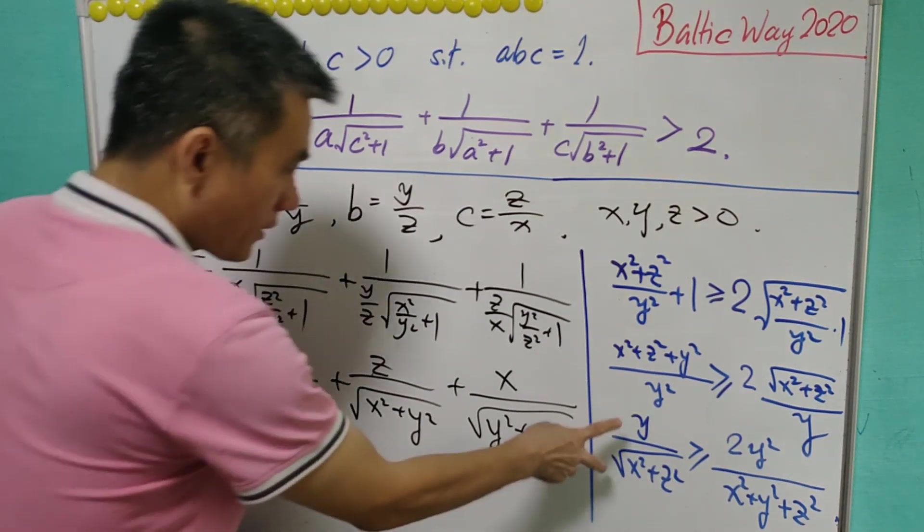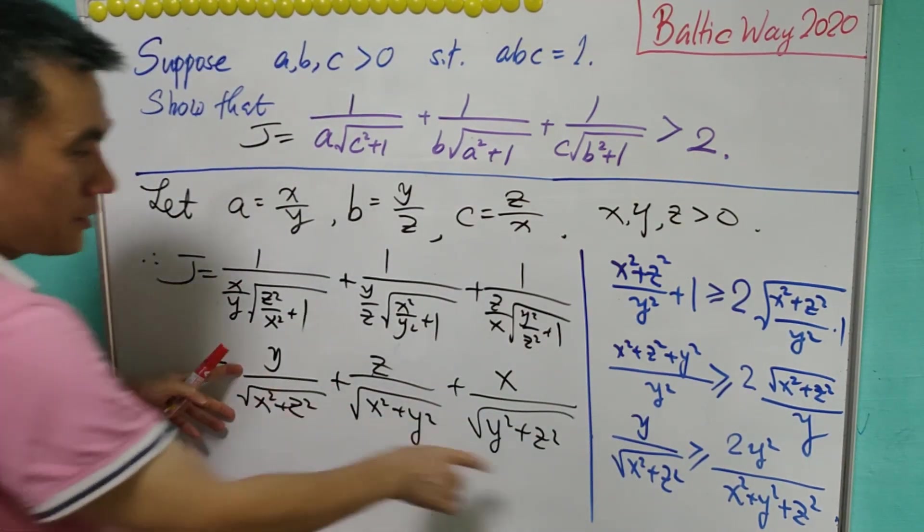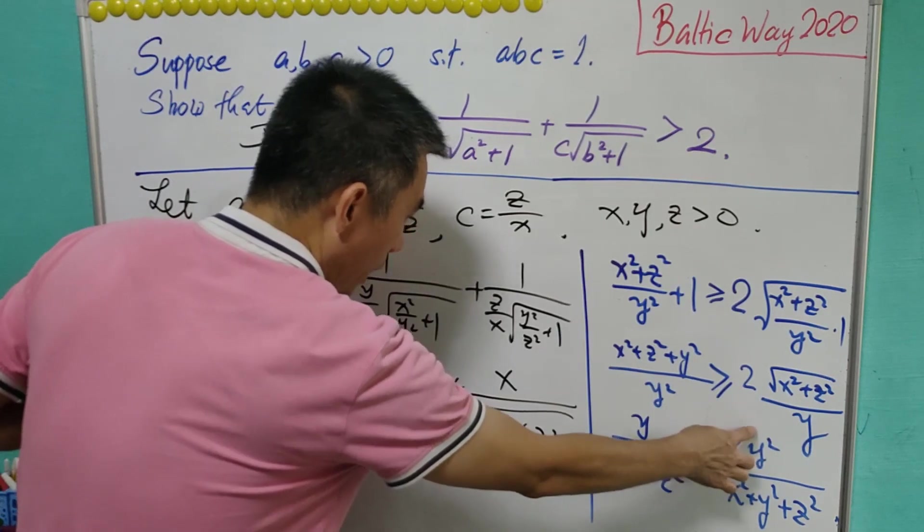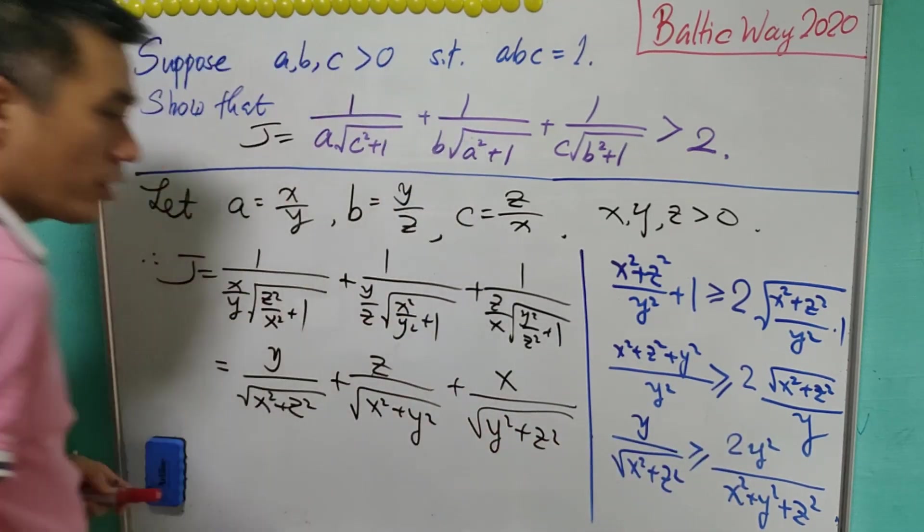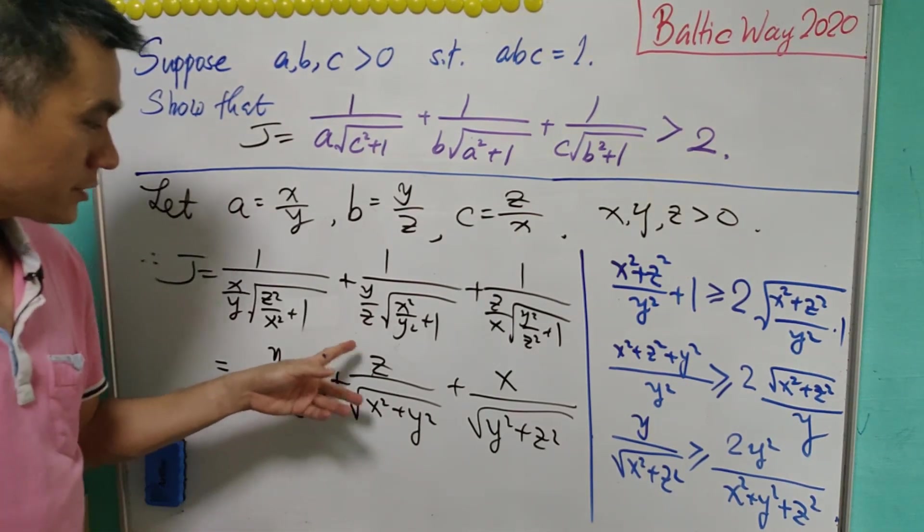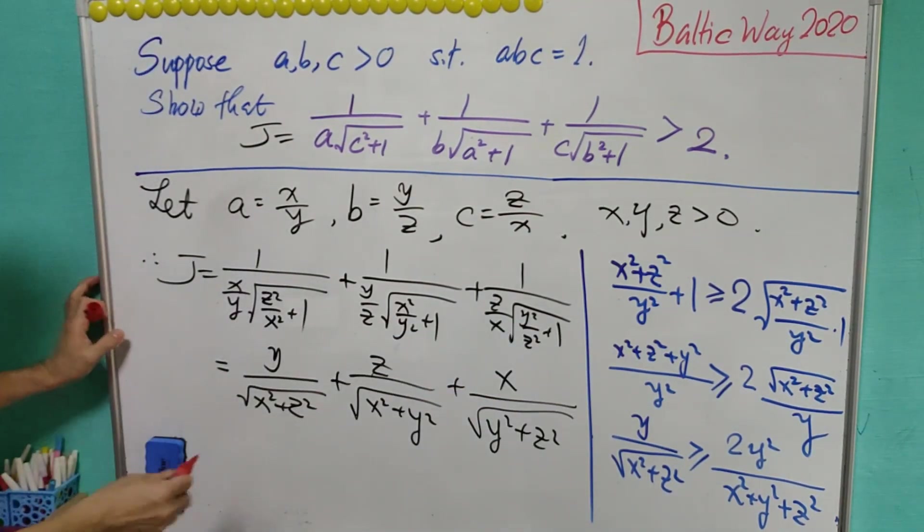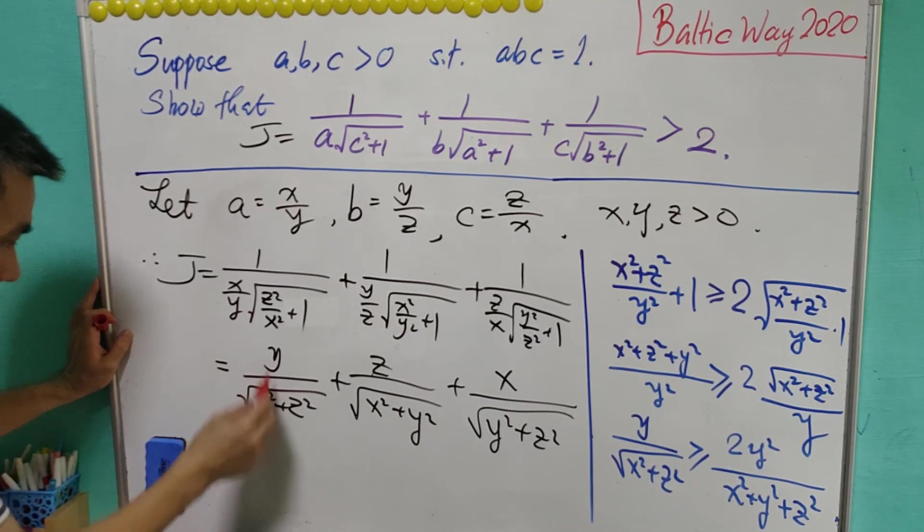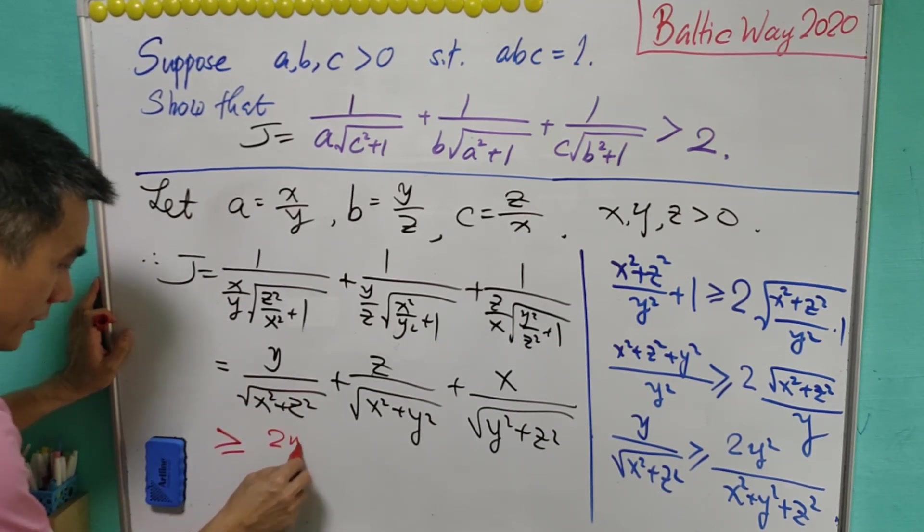Now, this is important! For the first term, this will be equal to 2 times y squared over (x squared plus y squared plus z squared). So using similar argument, each of these will have the similar form.